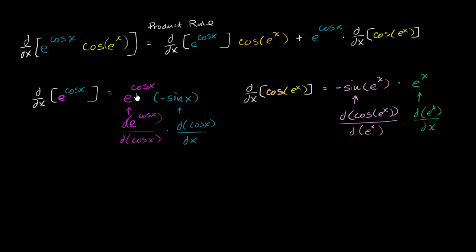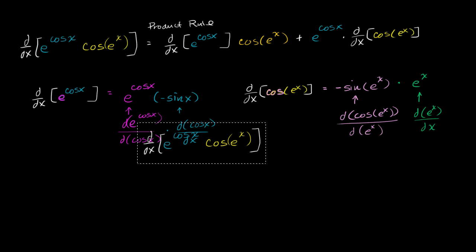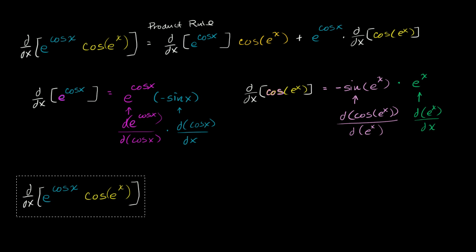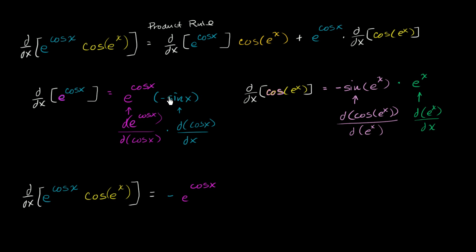We just have to substitute what we found using the chain rule back into our original expression. The derivative is going to be equal to: putting the e to the x and the negative out front, negative e to the cosine x times sine of x times cosine of e to the x...